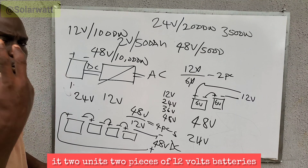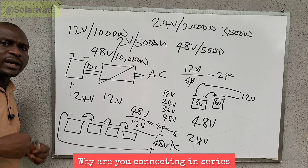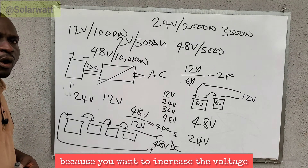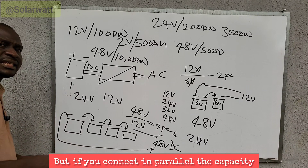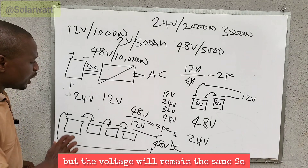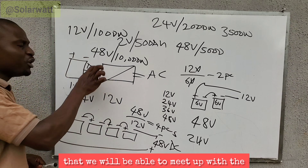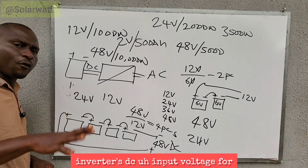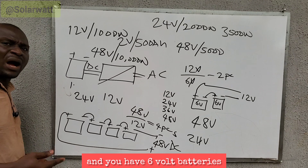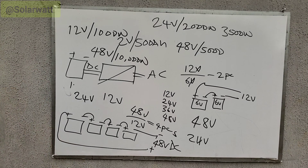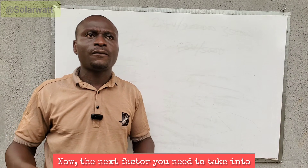You need two pieces of 12V batteries connected in series to give you 24V, because a single unit is only 12V. You connect in series because you want to increase the voltage — when you connect in series, voltage increases. If you connect in parallel, the capacity in amp hours increases but voltage remains the same. Connect in series to meet the inverter's DC input voltage requirement. If you have a 48V inverter and 6V batteries, divide 48 by 6 — that gives you the minimum number of batteries to connect in series.